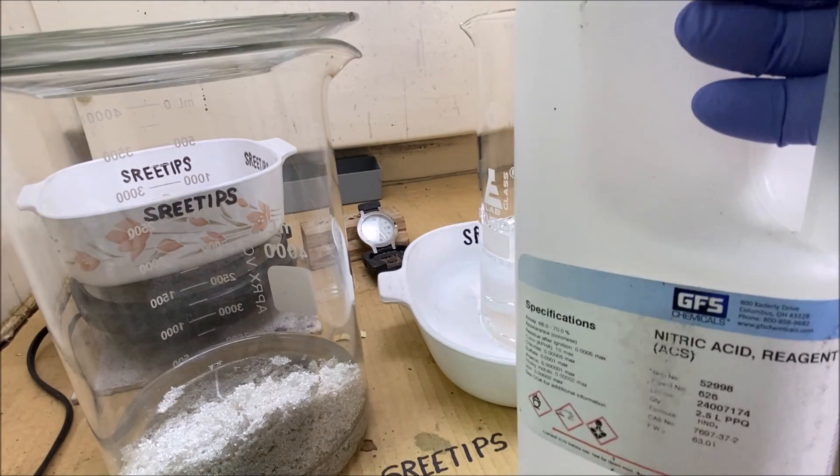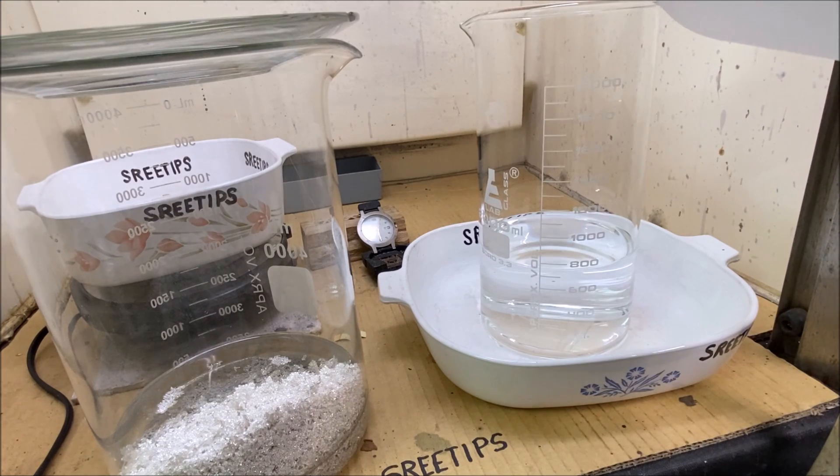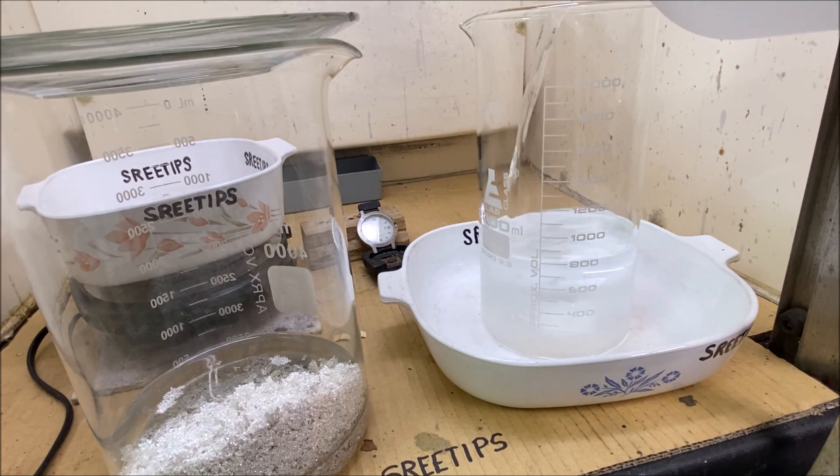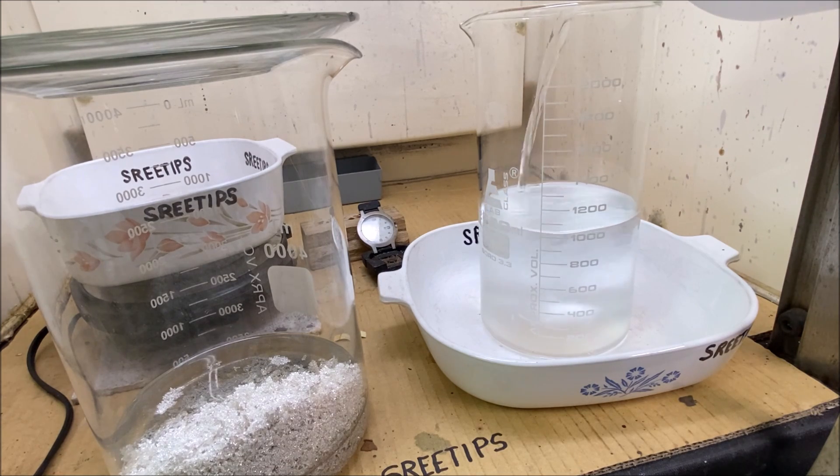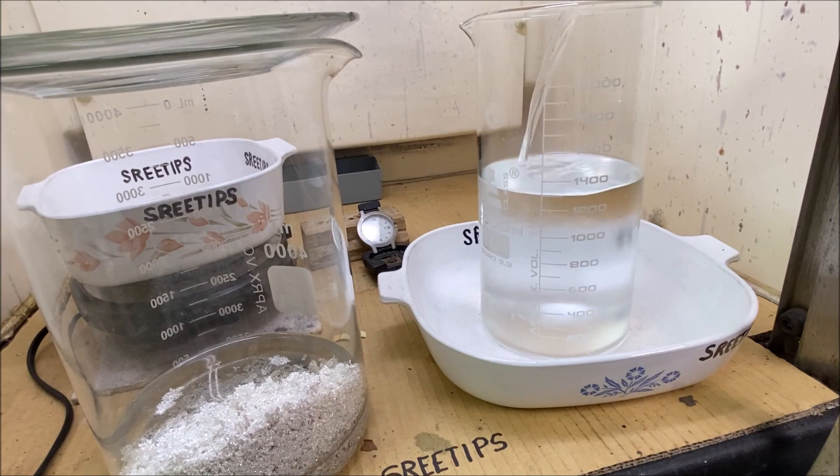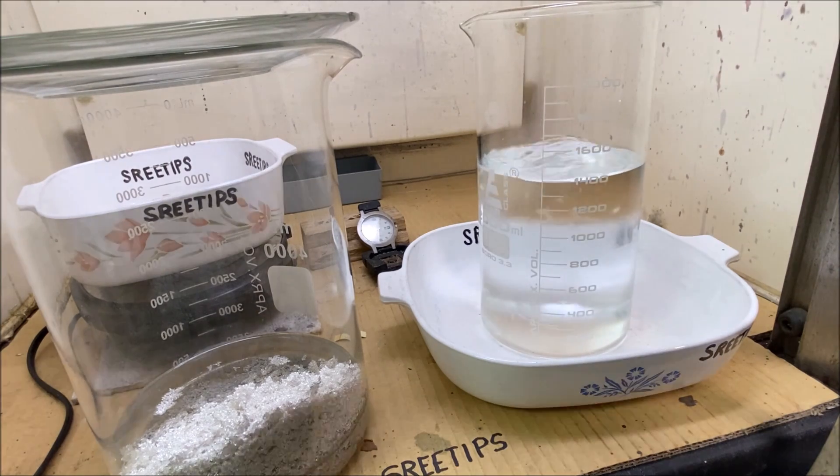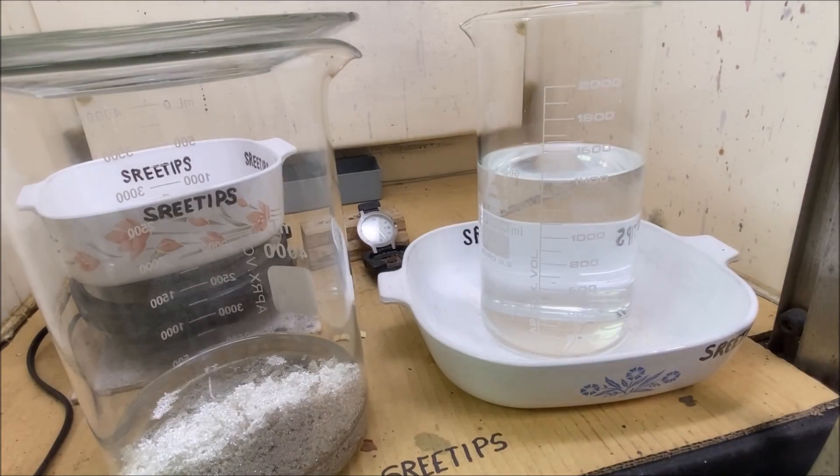What we'll do is add some nitric acid to this water to make a dilute solution of nitric acid. Let's see, 8 plus 6 is 14. So there we go, now we've got a dilute nitric acid solution. Let me give this a stir.